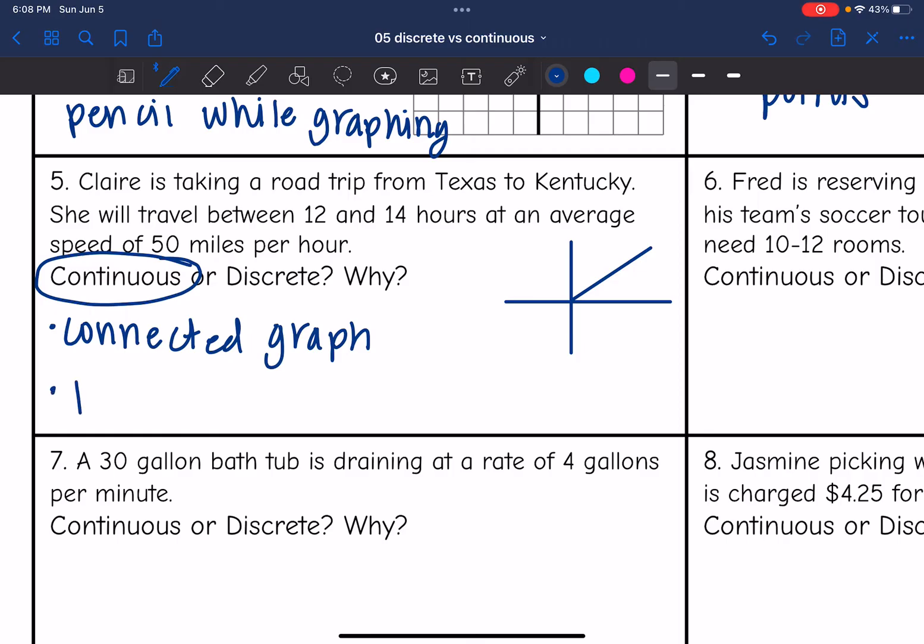So this is continuous because it is a connected graph and the partials are true. It's not like we're going to be counting, oh, she travels one hour, then two hours. That's going to be she's traveling in between one and two hours and then two to three hours. It's a continual thing.